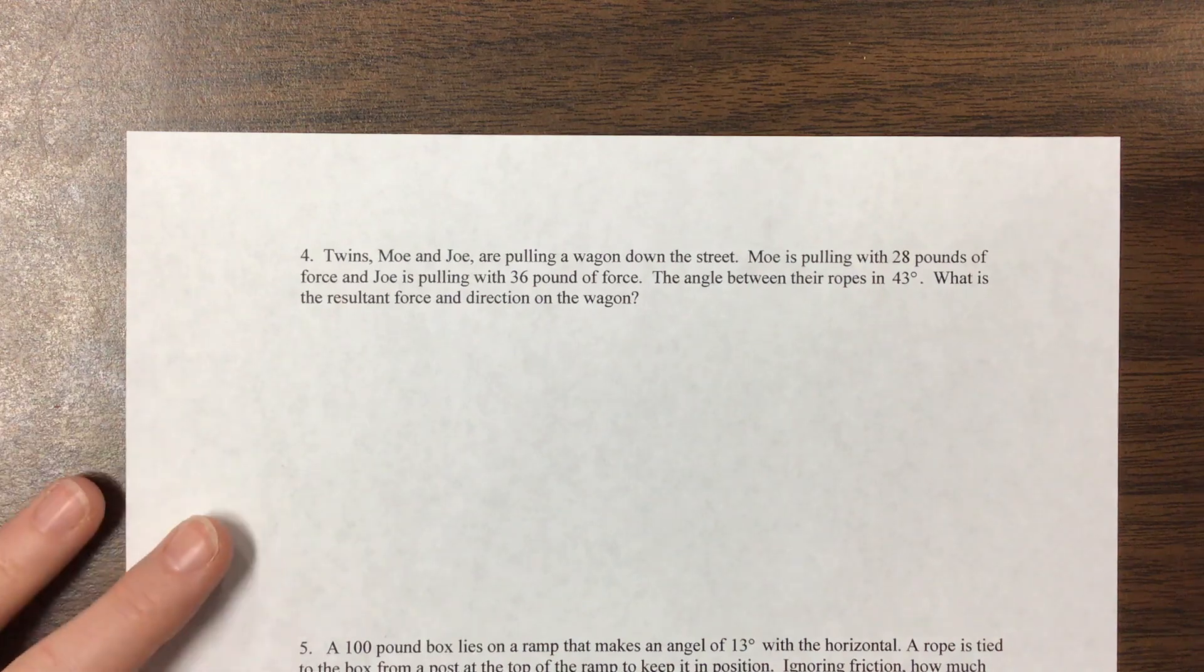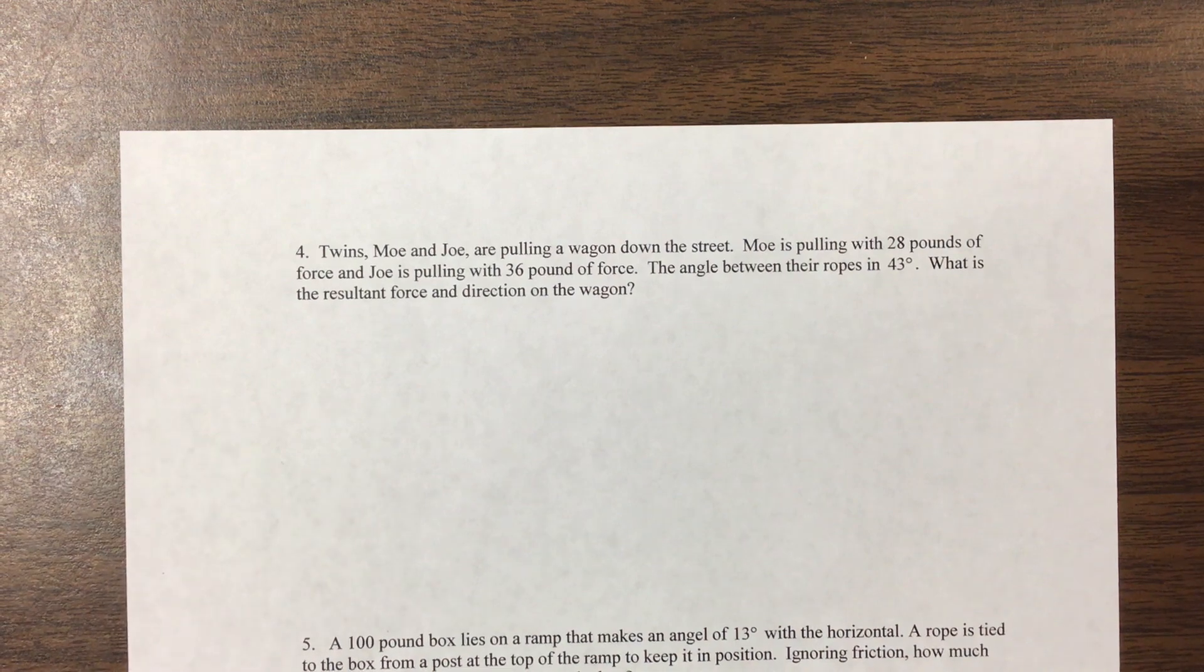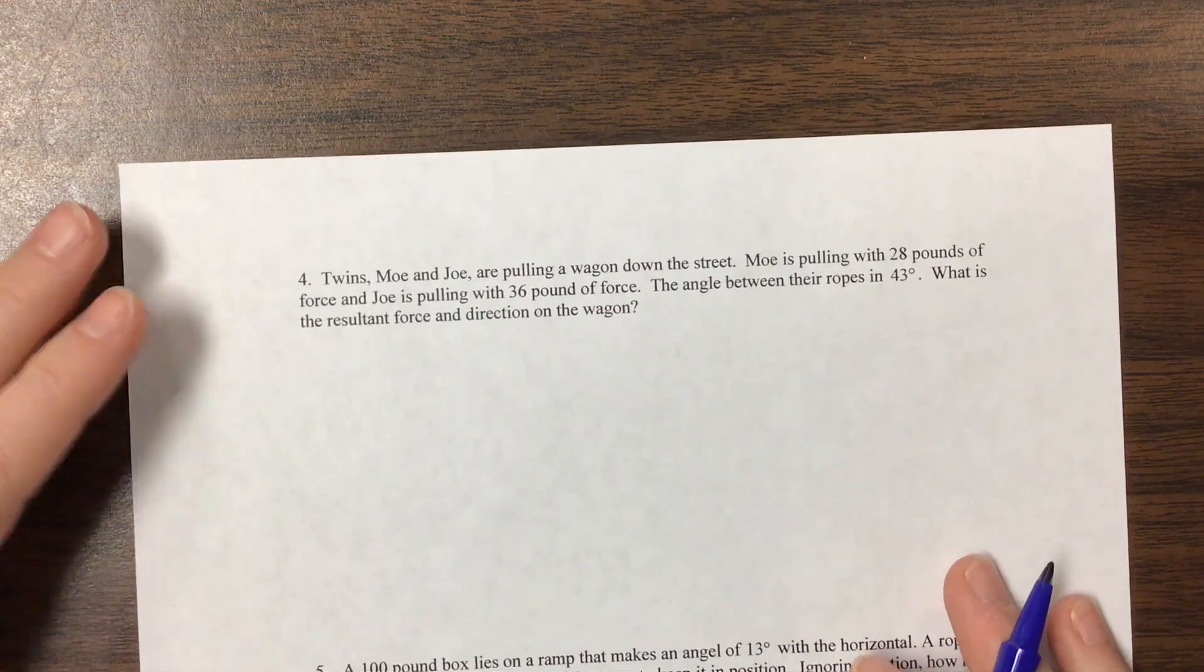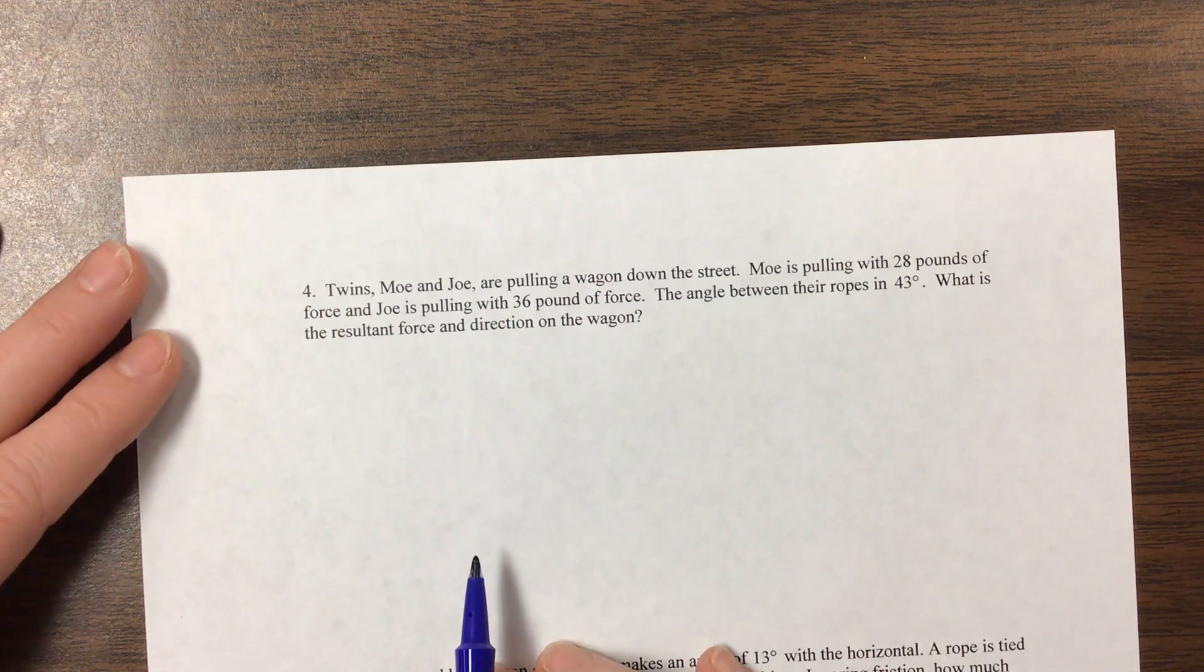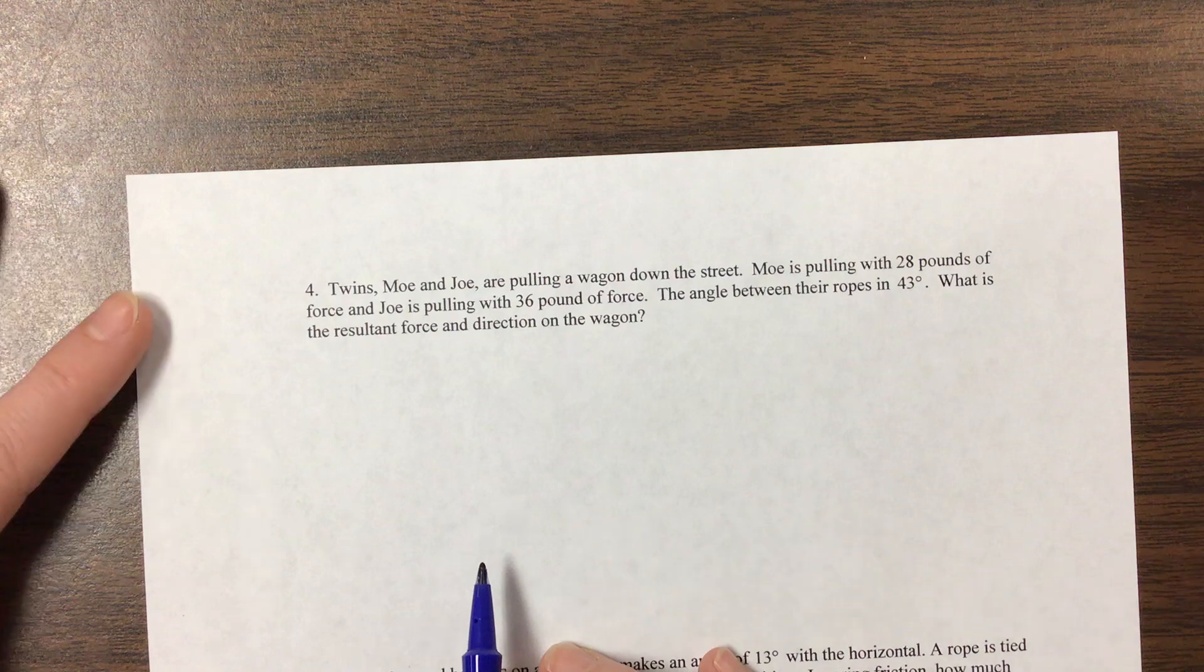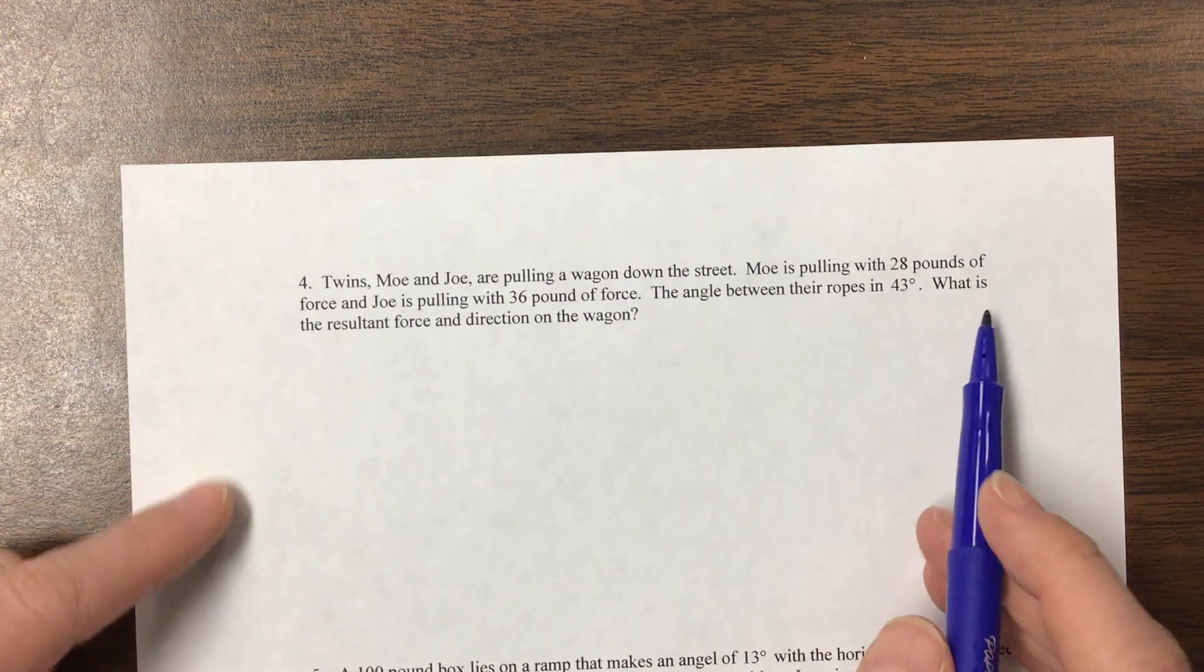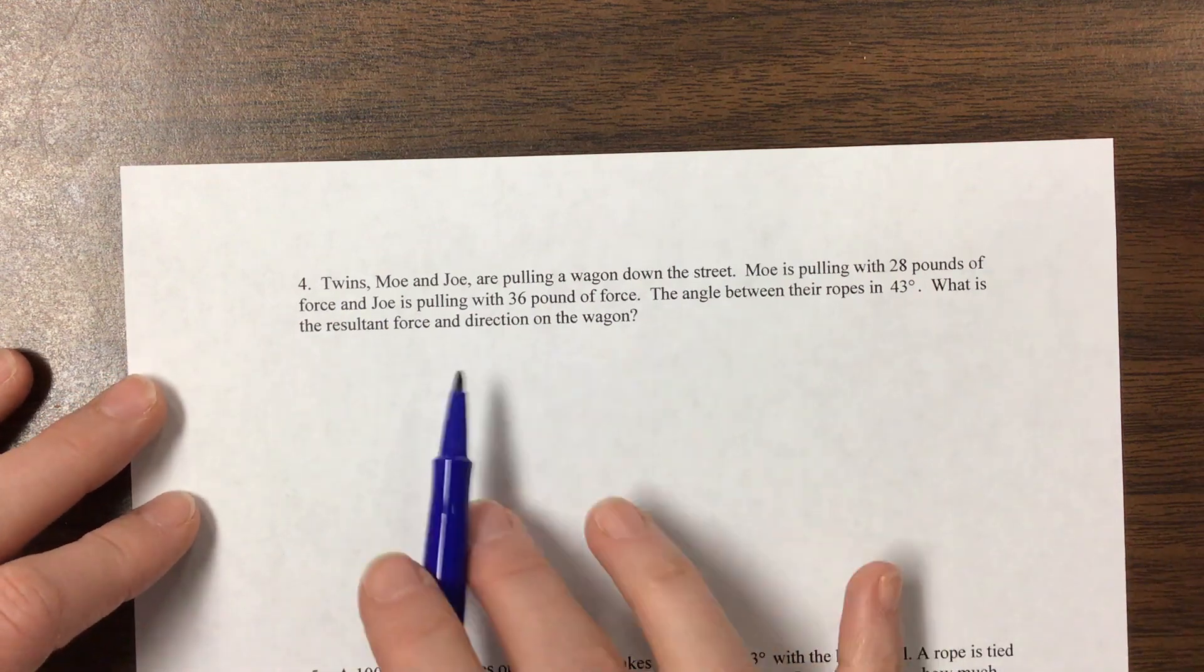We have two more application problems that we're going to work together. So this is the third video. Go back and watch the first two because I'm going to assume that you have. They're telling us here in this problem, twins Moe and Joe are pulling a wagon down the street. Moe is pulling with 28 pounds of force, and Joe is pulling with 36 pounds of force. The angle between the ropes is 43 degrees. What is the resultant force and direction on the wagon?